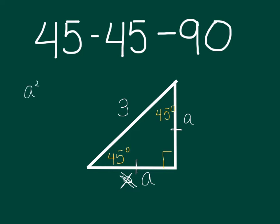So now I have that a² + a² = 3². Well a² + a² is just 2a² = 9. Divide by two, divide by two. a² = 9/2.